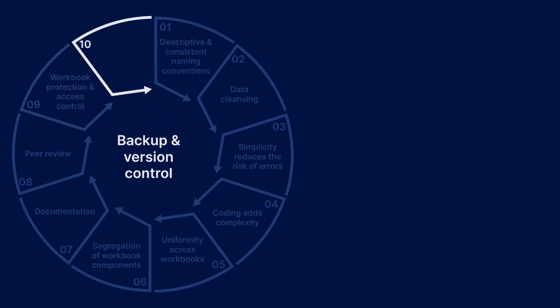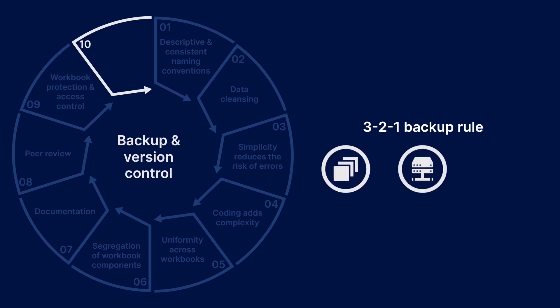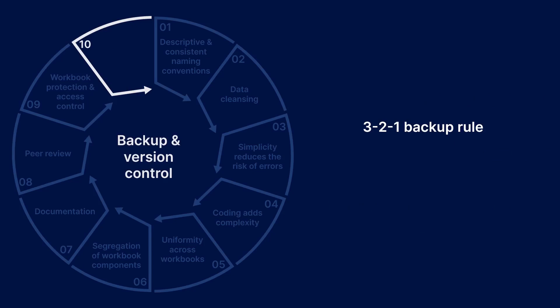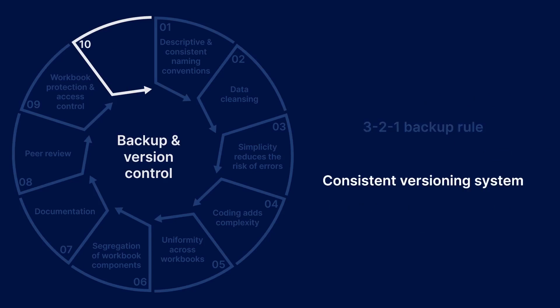Finally, Step 10 is backup and version control. Follow the 3-2-1 backup rule, which recommends keeping three copies of your data on two different types of media, with one copy stored off-site, whilst adhering to the protection and access controls outlined in Step 9. In a larger organisation, these backups may be handled by your IT department. Choose a versioning system and apply it consistently, and ensure you keep copies of prior versions of each workbook in case you need to roll back due to errors. I normally use year and month numbering, with a sub-level to differentiate multiple versions in the same month.